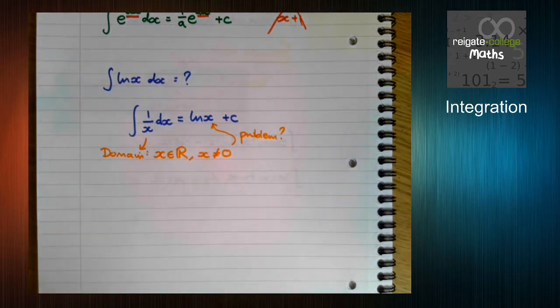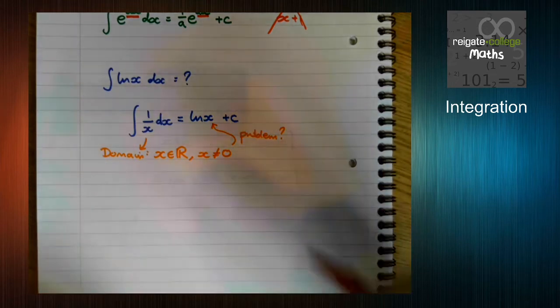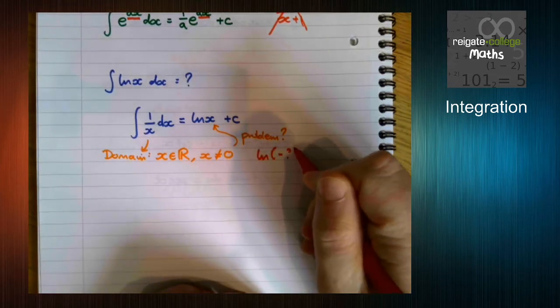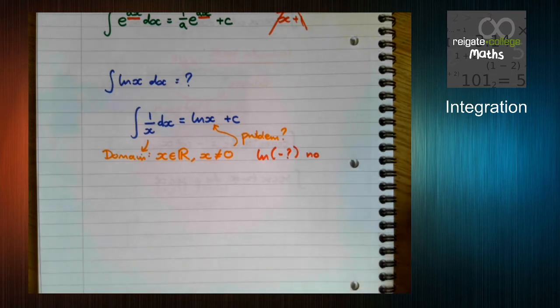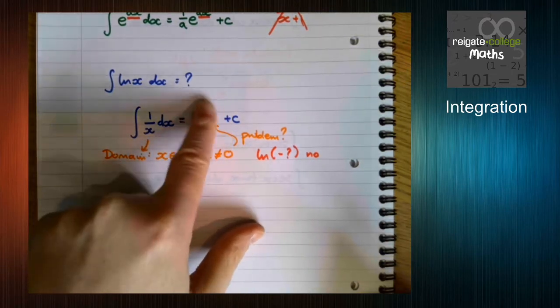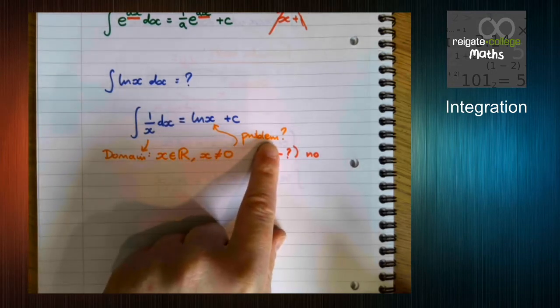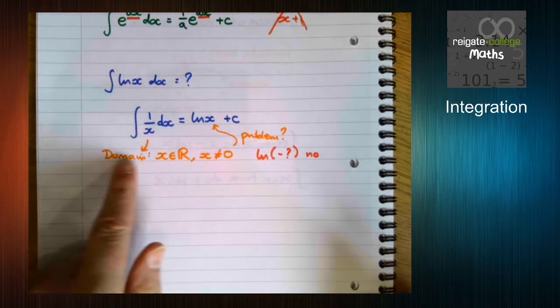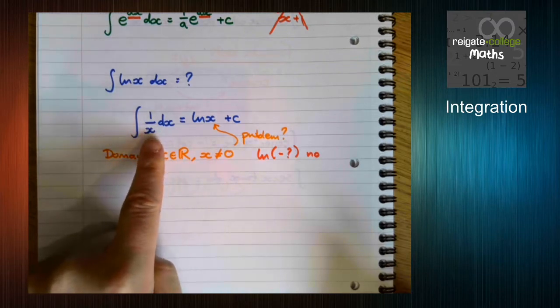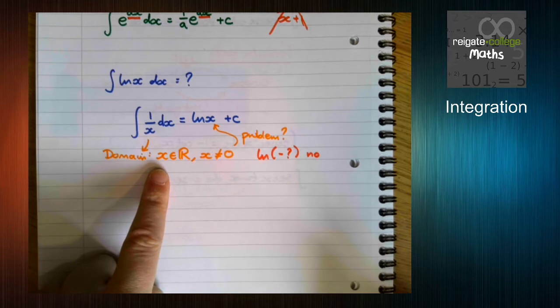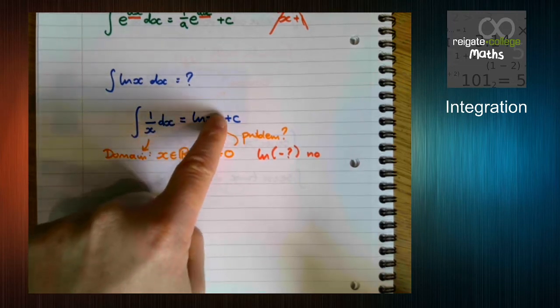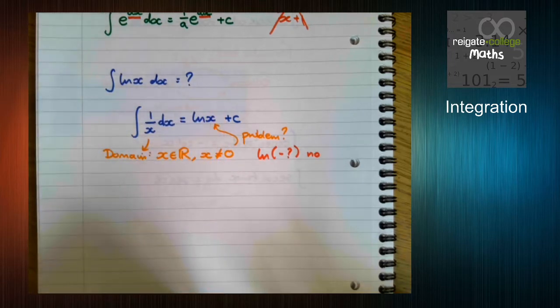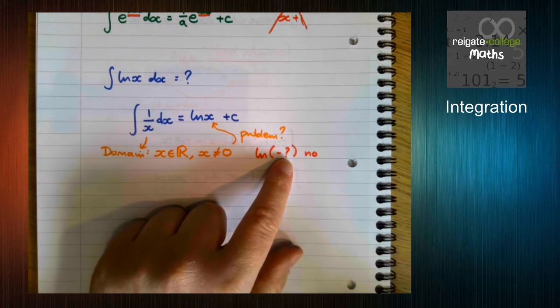The problem is that we can't do log of a negative number. It doesn't work. So we need to change this so that this is no longer a problem. We can't do anything about the domain here. This domain has to remain the same.